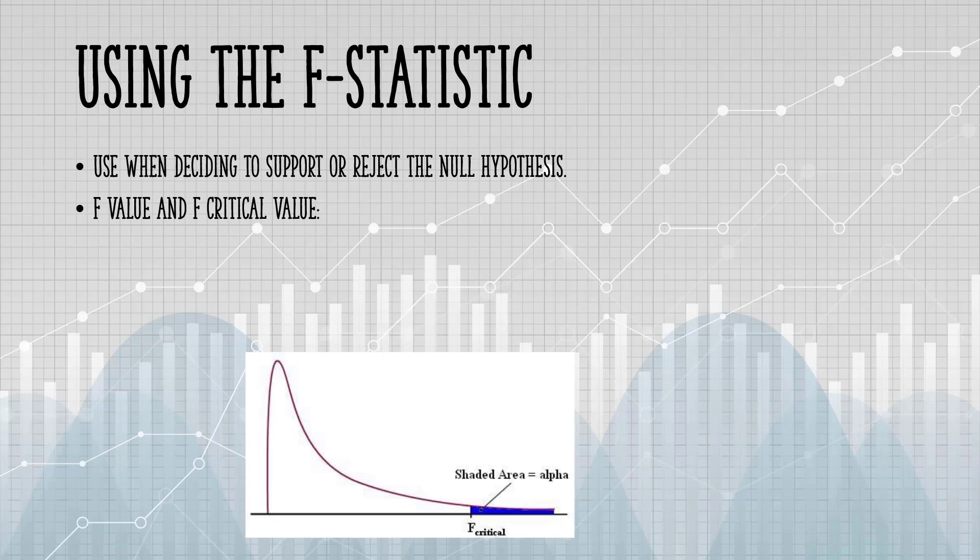In your F-test results, you'll have both an F-value and an F-critical value. The value you calculate from your data is called the F-statistic or F-value.